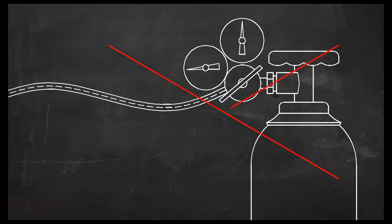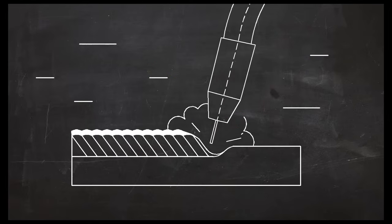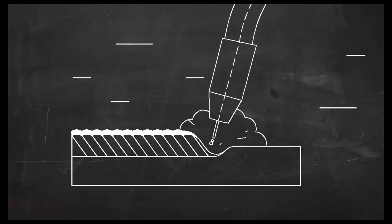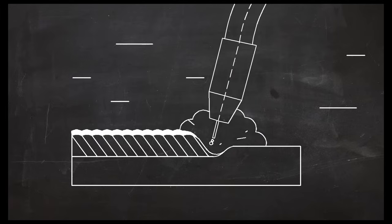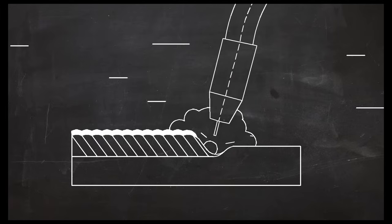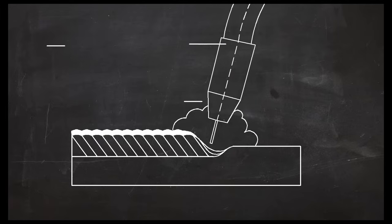One advantage of the self-shielded flux core process is that the added cost and inconvenience of gas shielding equipment is eliminated. Also, self-shielded electrodes are less sensitive to drafts and breezes that easily contaminate gas-shielded processes like MIG welding. This can be a real advantage in some applications.